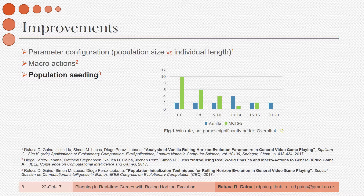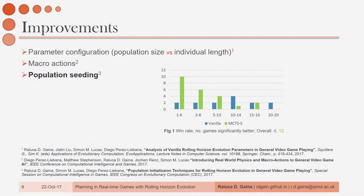A slightly disappointing result, but it was still better than Monte Carlo Tree Search. We looked at what happened if we tried to reduce the search space through simple macro actions, which in this case were just repeating the same action multiple times. Although this worked better than the vanilla algorithm, it was still not good enough. So we tried to start our evolution from a better point than just random through population seeding. We tried two different methods: a one-step look-ahead and Monte Carlo Tree Search, using half the budget to provide this initial solution. The Monte Carlo Tree Search seeding did work great, but only in small population sizes and individual lengths, and it decreased performance in several games.